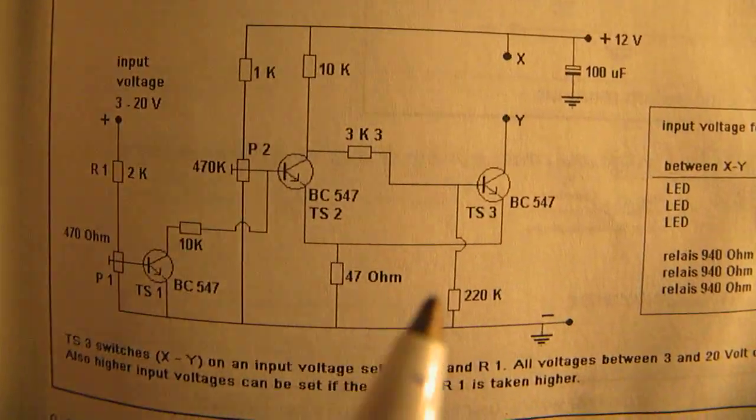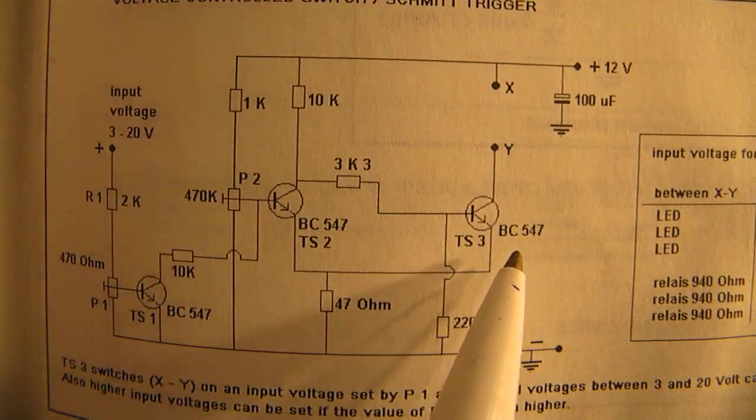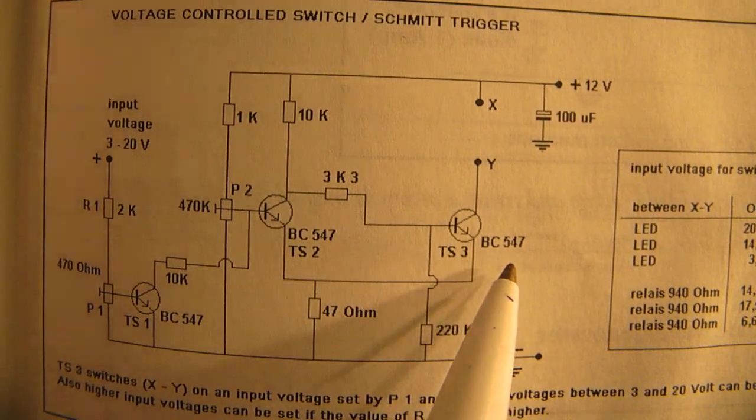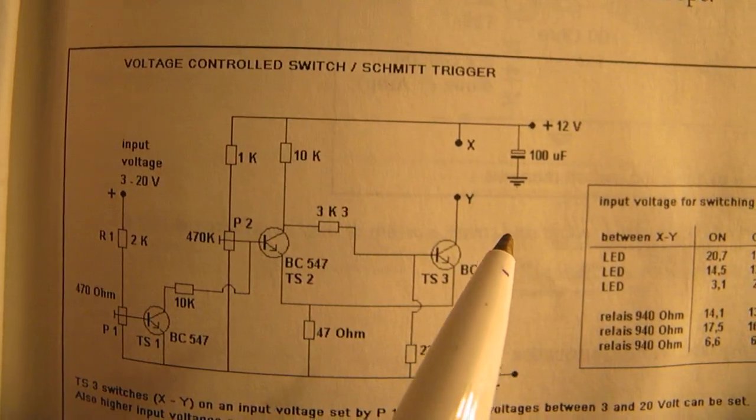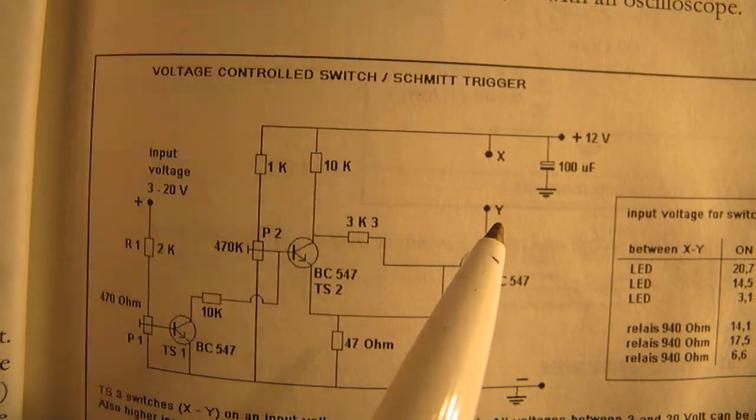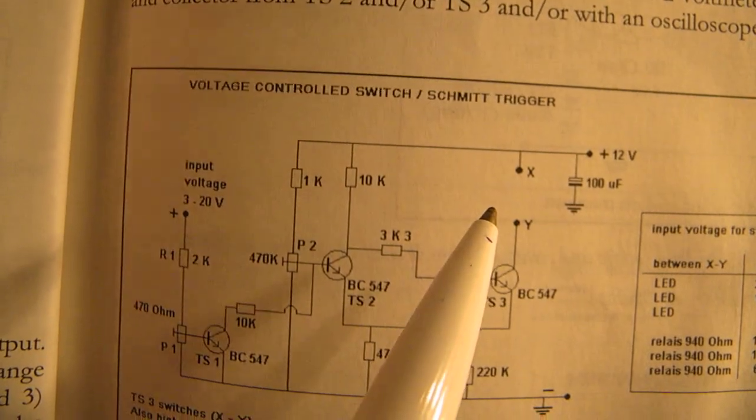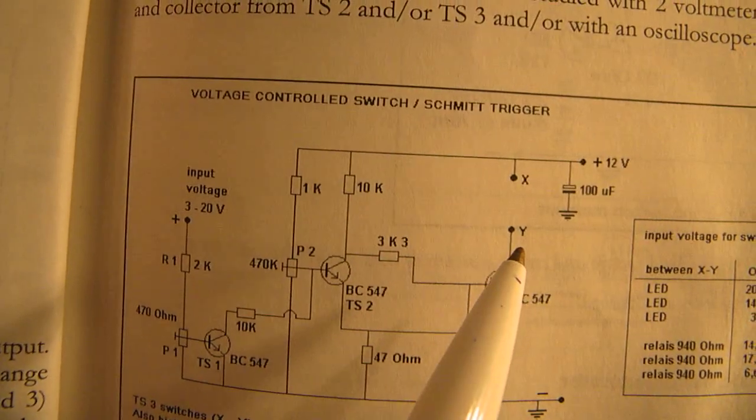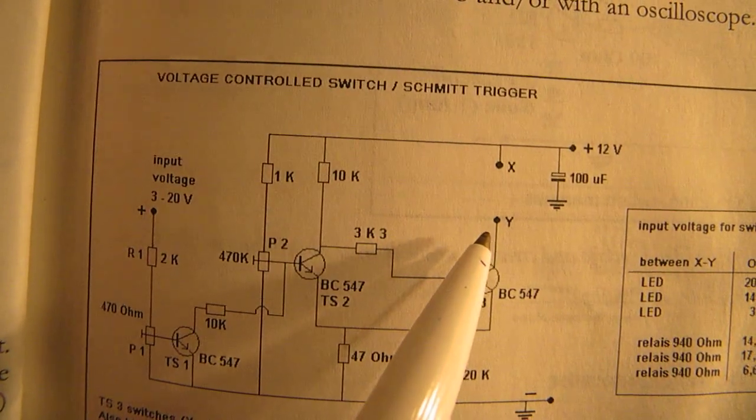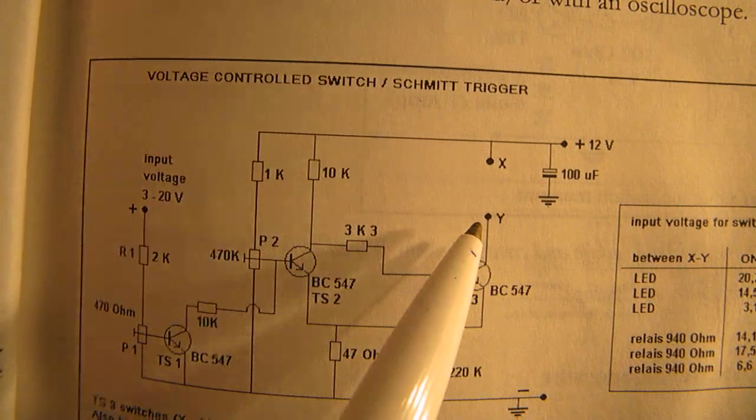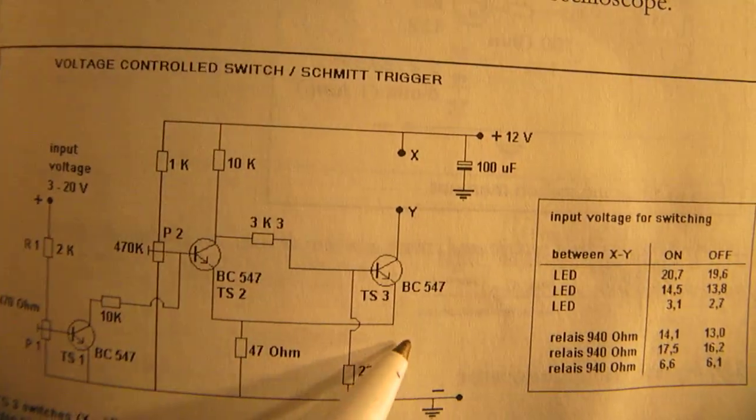You can also use a BD139 NPN transistor here. In that case you can switch heavier relays, 12 volt relays with internal coil DC resistance from 100 ohms up to 200 ohms.